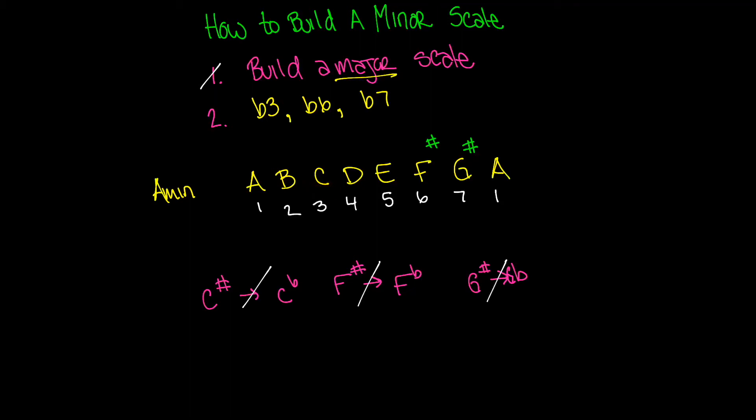So I want to think to myself, what is a half step lower than C sharp? That would be C. And I want to think to myself, what is a half step lower than F sharp? And that would be F. And finally, I want to think to myself, what is a half step lower than G sharp? And that would be G.